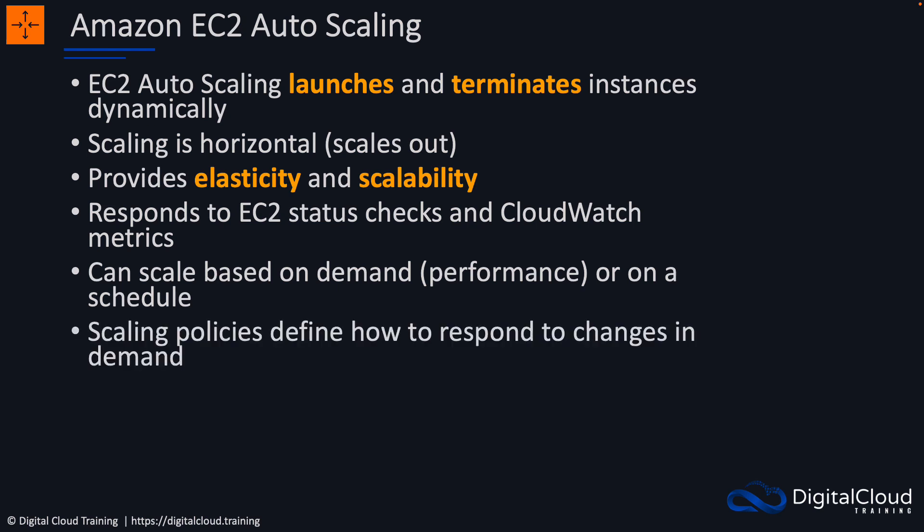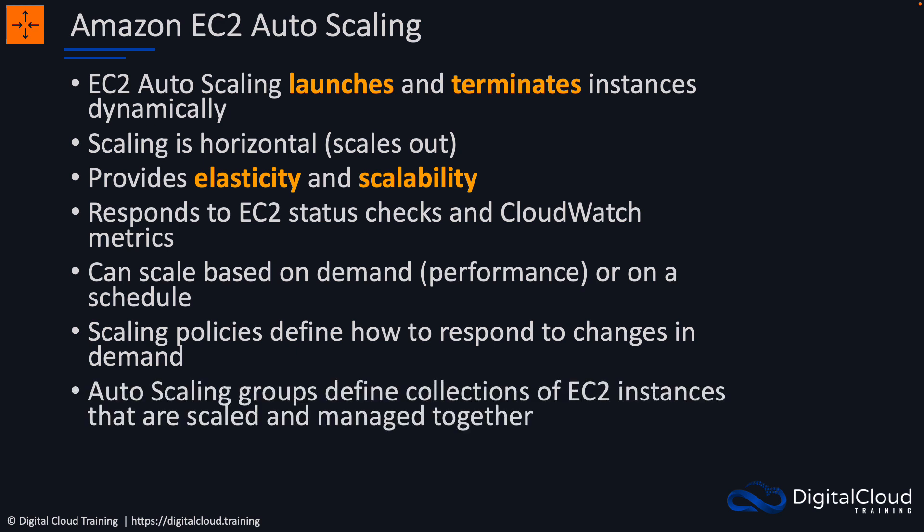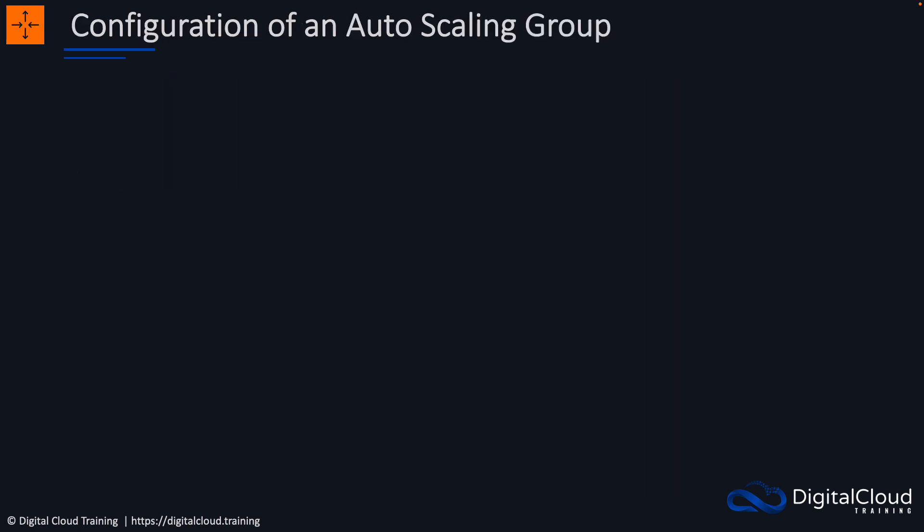Scaling policies define how to respond to changes in demand, and we can configure those in auto scaling. Auto scaling groups are what we create to define collections of instances that get scaled and managed together, and that's where we define the policies for how that scaling actually happens.